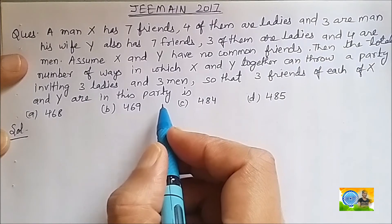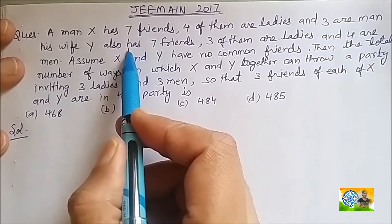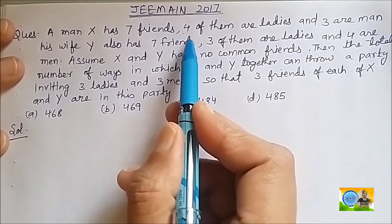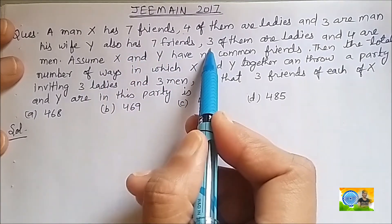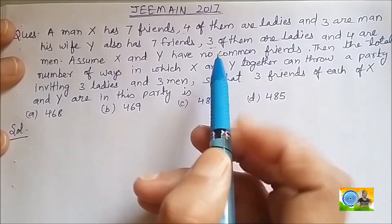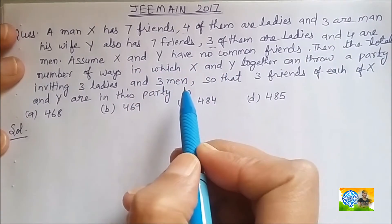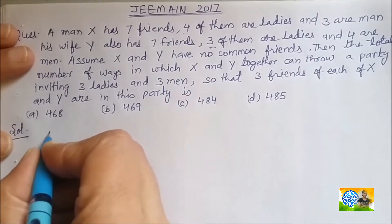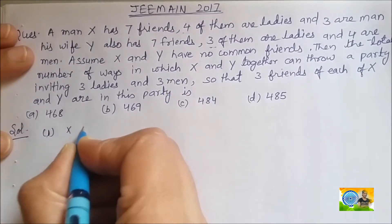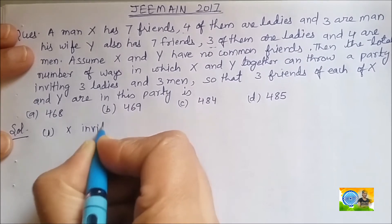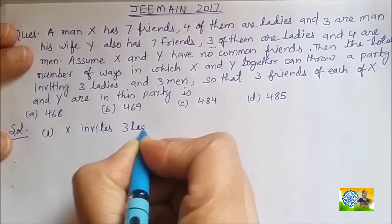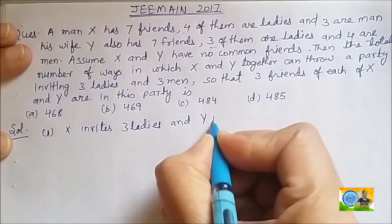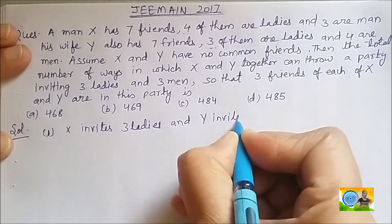Now let us write the cases that arise. Both X and Y have 7 friends — X has 4 ladies and 3 men; Y has 3 ladies and 4 men. There are no common friends. Case 1: X invites 3 ladies and Y invites 3 men.